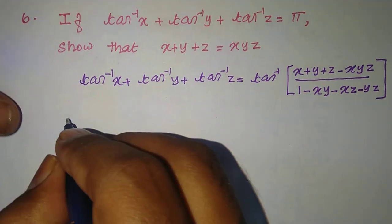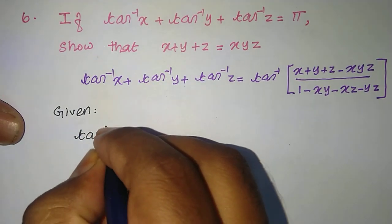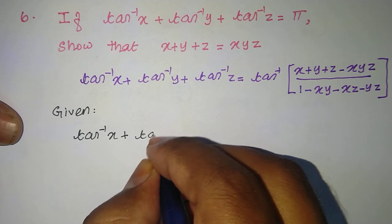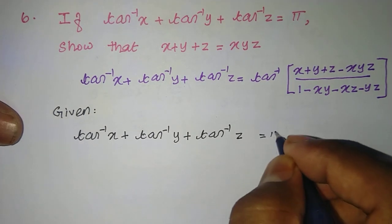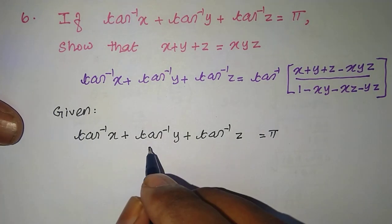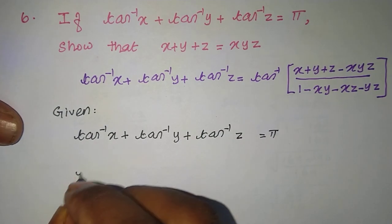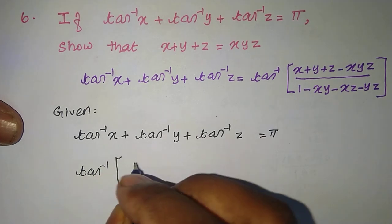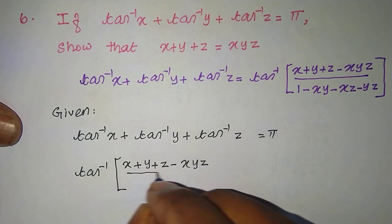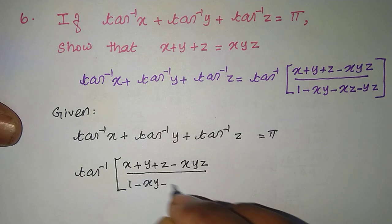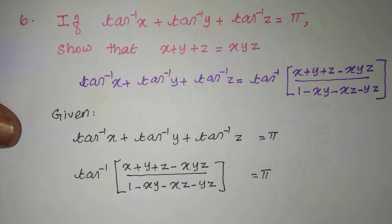Just apply this formula. We apply the formula to the given condition: tan inverse of x plus tan inverse of y plus tan inverse of z equals pi. So we get tan inverse of x plus y plus z minus xyz, divided by 1 minus xy minus yz minus xz, equals pi.